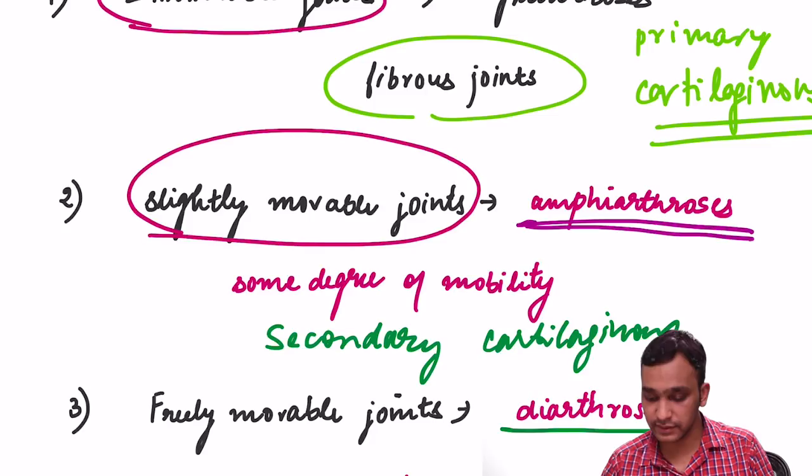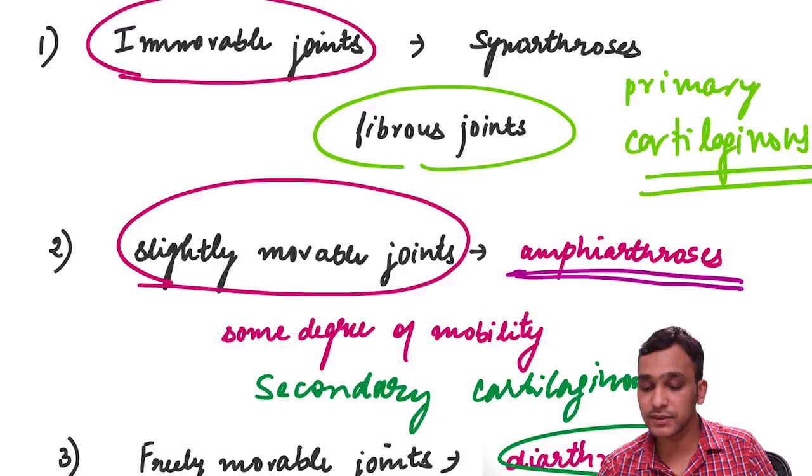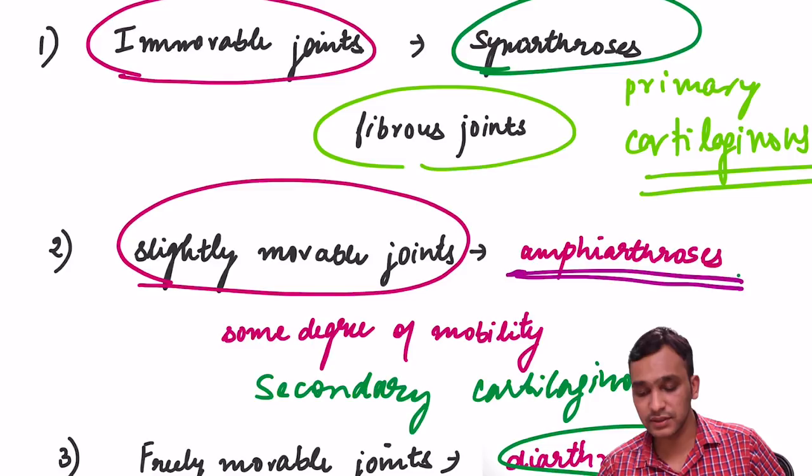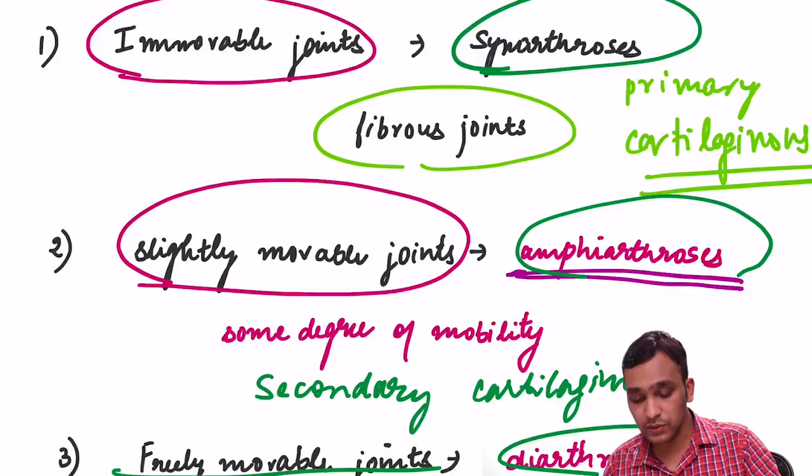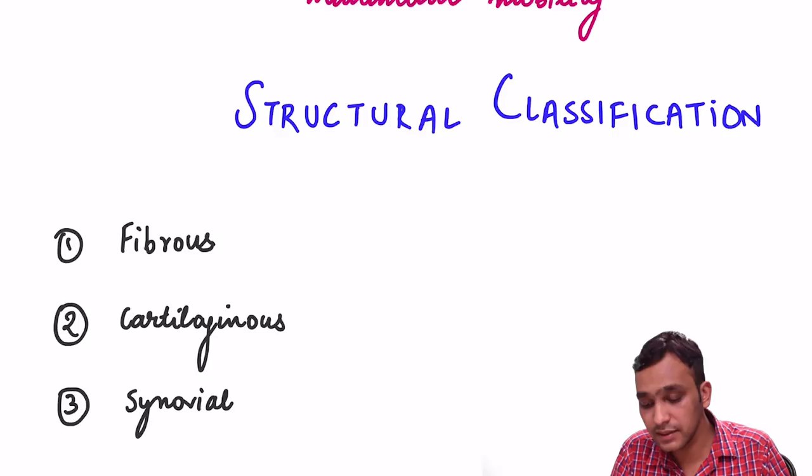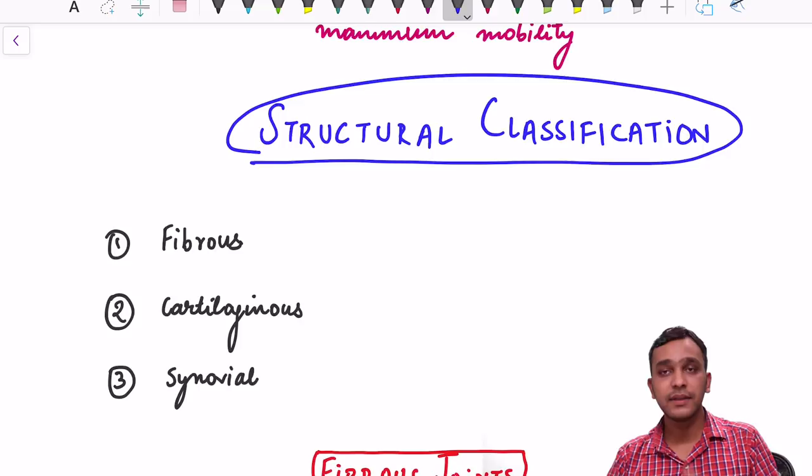Freely movable joints are synovial joints, also known as diarthrosis. To summarize: immovable joints are known as synarthrosis, slightly movable joints as amphiarthrosis, and freely movable joints as diarthrosis. Coming to the structural classification, joints are classified based on structure as fibrous, cartilaginous, and synovial joints.